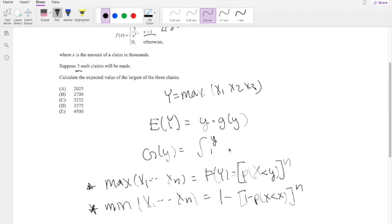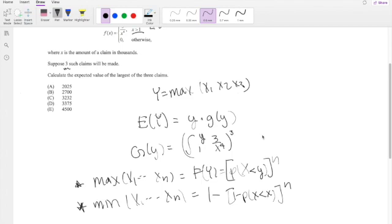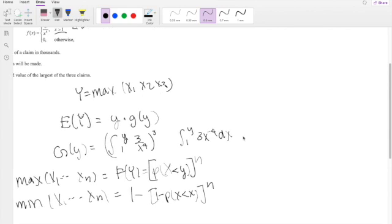And again, x is bounded between 1 and y, so this is going to be 1 to y, 3 over x^4. And remember, this is to the nth power, where n is the number of claims, so this is going to be 3. So taking the antiderivative, this is technically the same thing as 1 to y, 3x^(-4) dx.